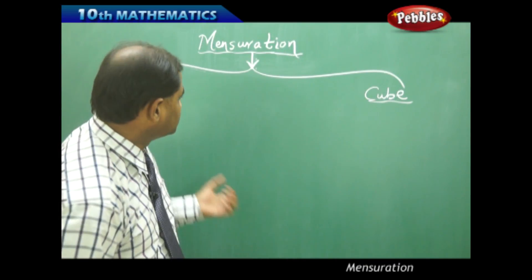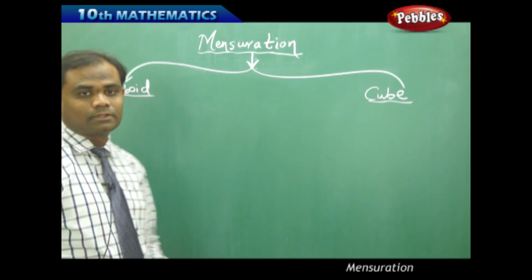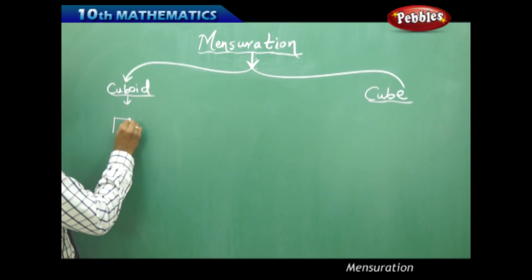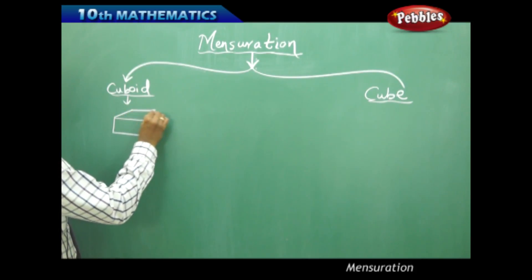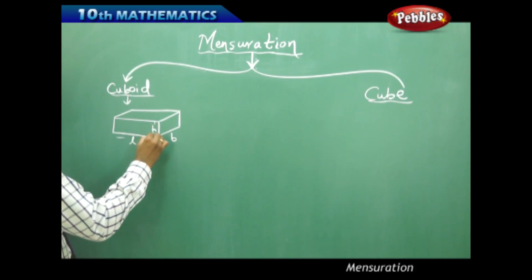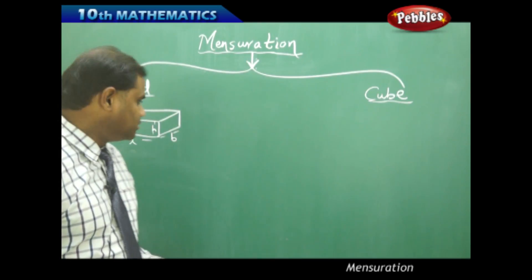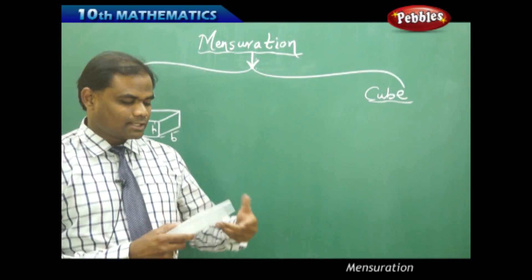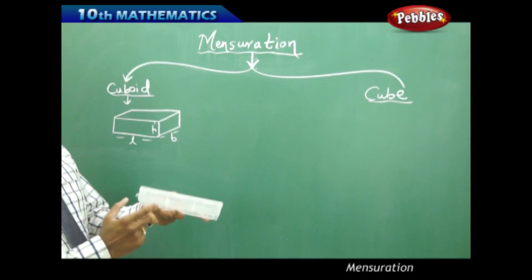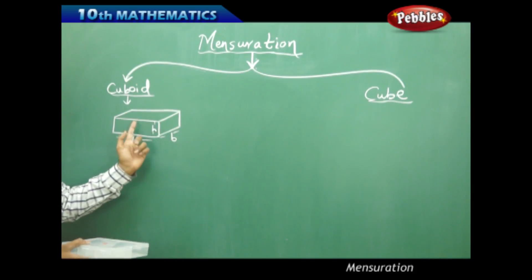To start with cube and cuboid, the first solid structure is a cuboid which is in the shape of a box. When I draw a cuboid, it has length, width, and height. A rectangular box which has length L, breadth B, and height H together make the dimensions to form a cuboid.